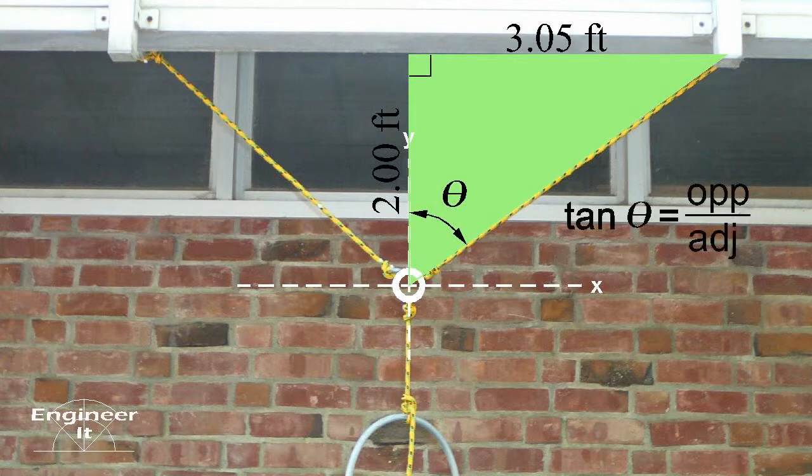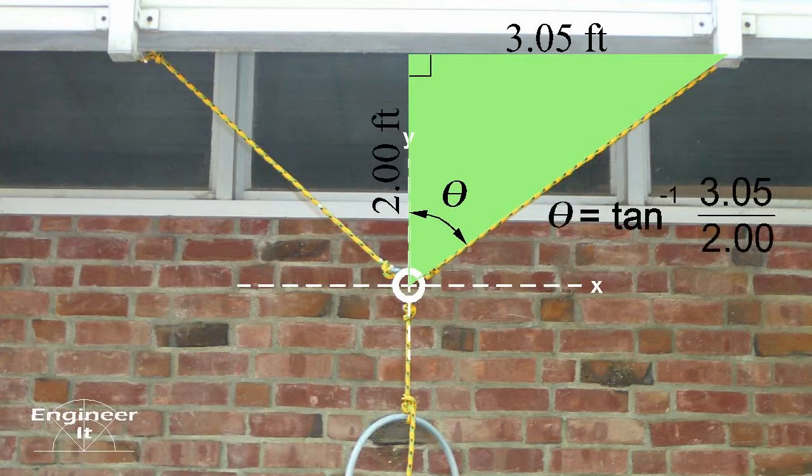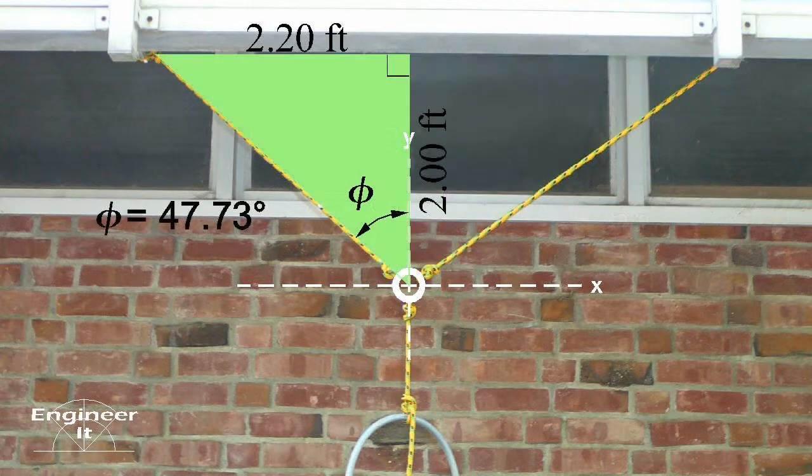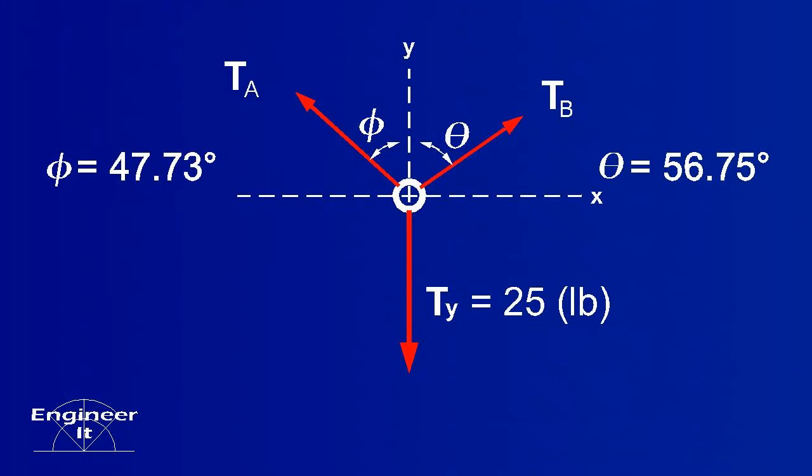Using trig, let's solve for the angle theta. Solving for the angle of the rope also gives us the angle of the tension force because the line of action must be in the direction of the rope. Solve for the angle of the other rope as well. Now include these angles on the free body diagram.